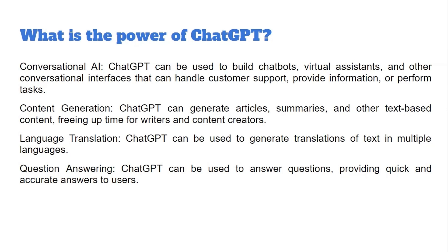The first point is conversational AI. ChatGPT can chat with you just like a human being. It is used to build chatbots, virtual assistants, and other conversational interfaces that can handle customer support, provide information, or perform tasks. It takes input in natural language, so we do not have to think about how to format our question — it can talk to us in the way we normally communicate.